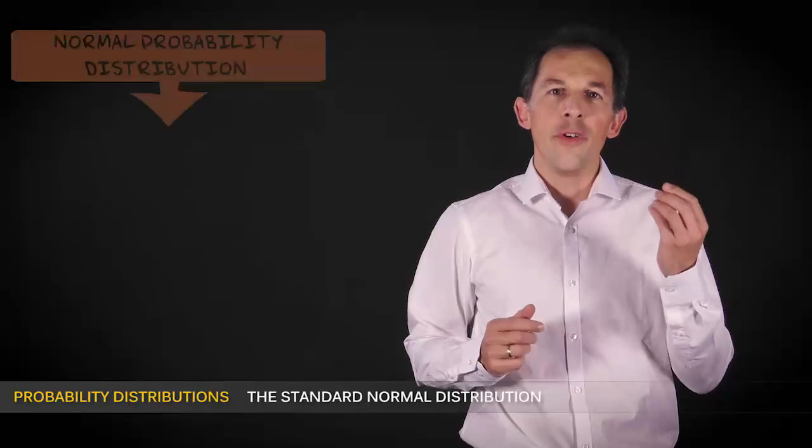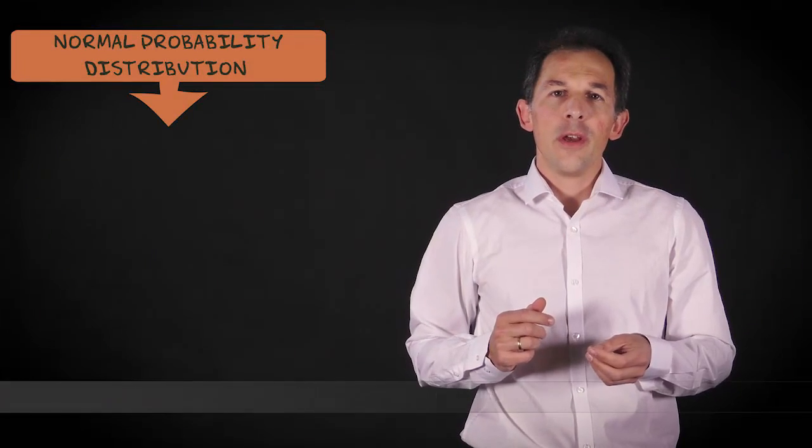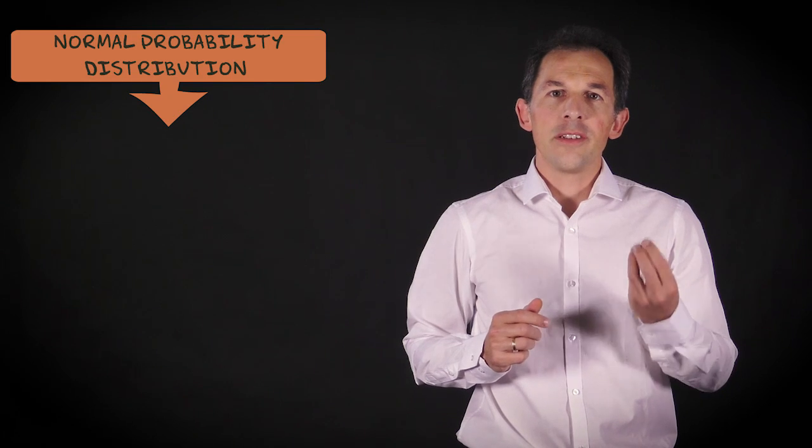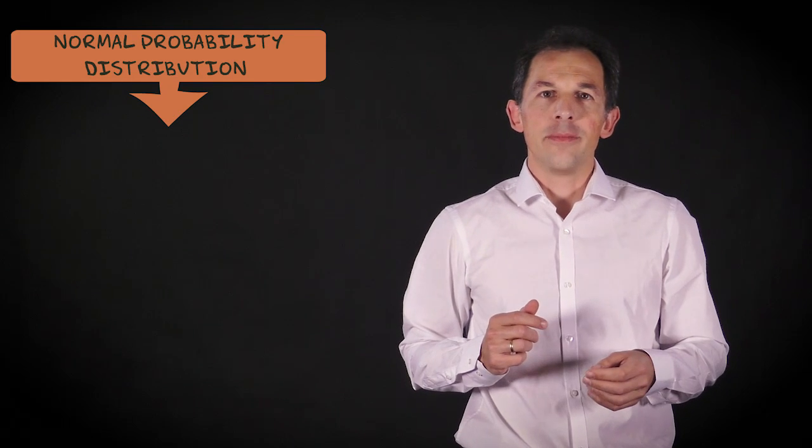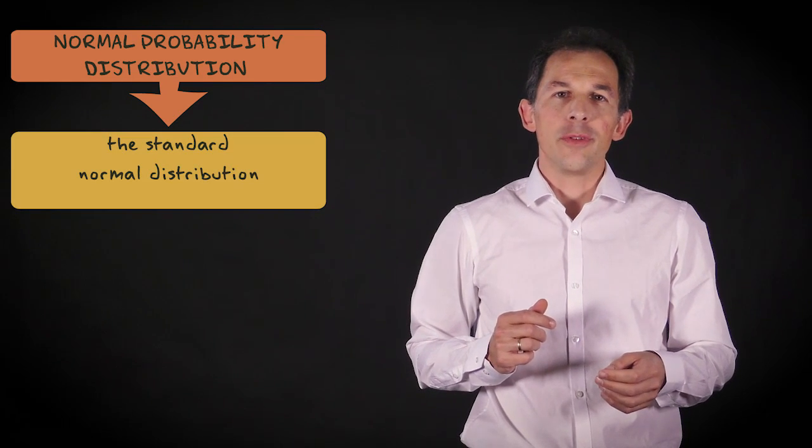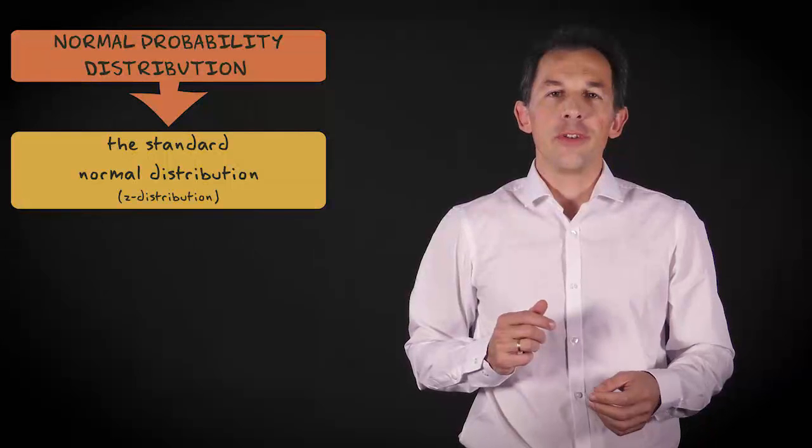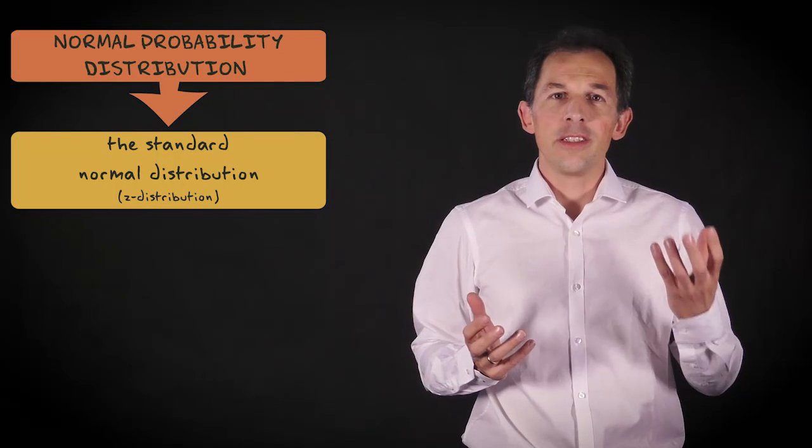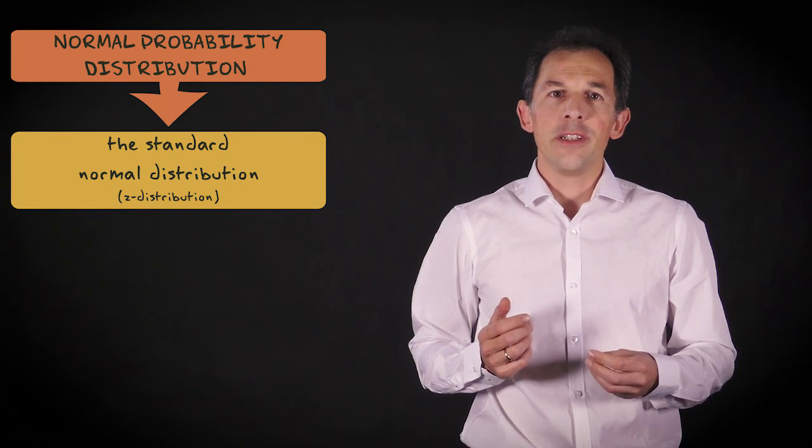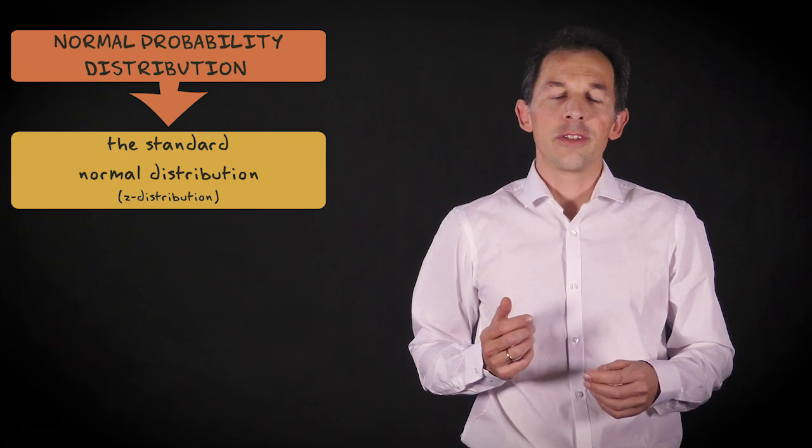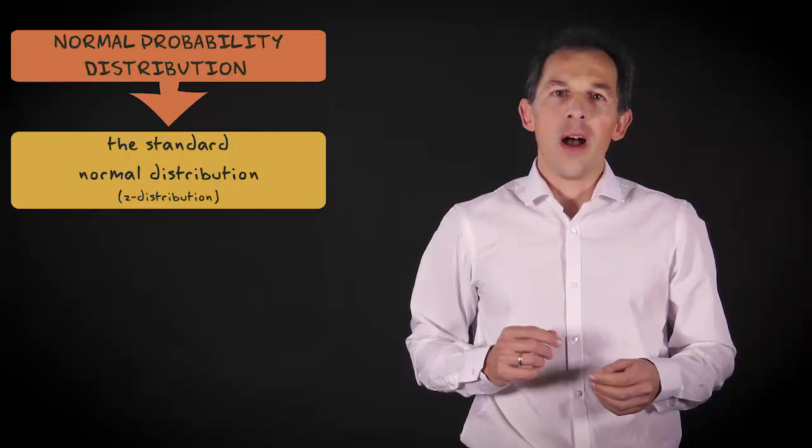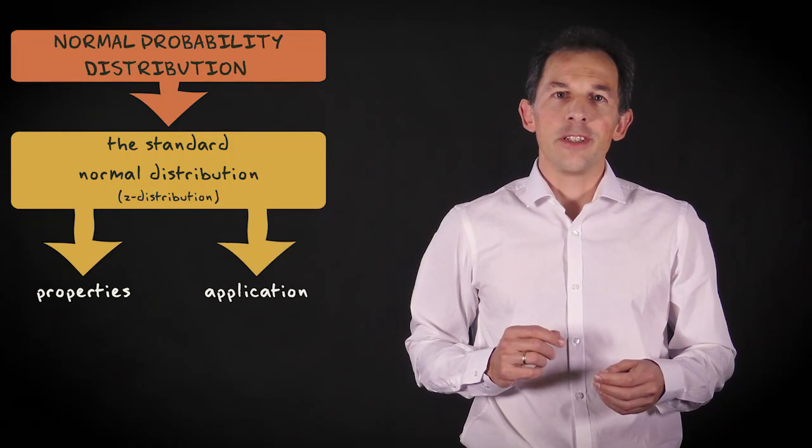There is a special form of the normal probability distribution which was crucial when calculators and computers were not available yet. The standard normal distribution, also called the Z-distribution, but even today it is still frequently used for quick calculations and to present analysis results. In this video I'll explain its properties and application.